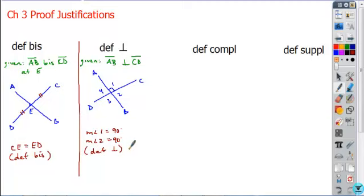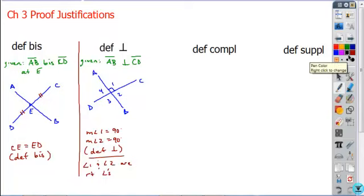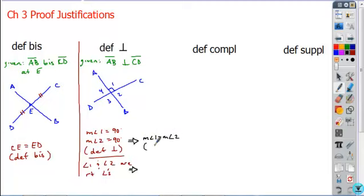There's another set of statements you could write: on the relationship route, you can say that angles 1 and 2 are right angles. Both routes can lead to the same ultimate conclusion in a proof — that angle 1 is equal to angle 2 — and the justification for that would be transitive property or substitution, since both angles equal 90 degrees.